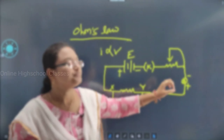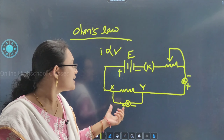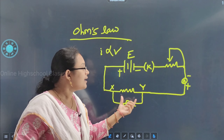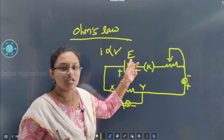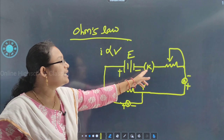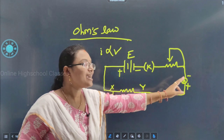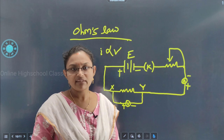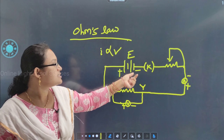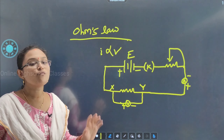Here there is a conductor XY. This conductor is connected to a battery of EMF E — electromotive force E — and switch K, with the help of a rheostat. An ammeter and voltmeter are also connected to that conductor XY.